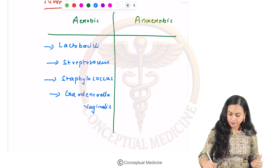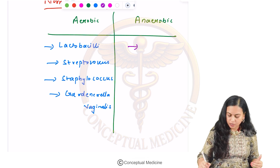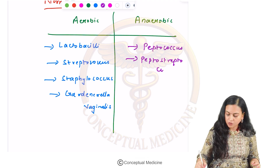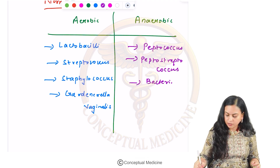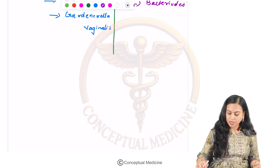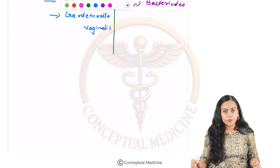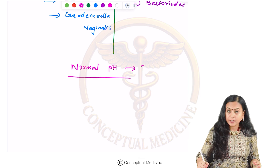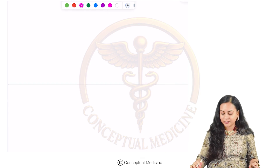Anaerobic bacteria include Peptococcus, Peptostreptococcus, and Bacteroides. Another important point: the normal pH of the vagina ranges between 3.8 to 4.5.